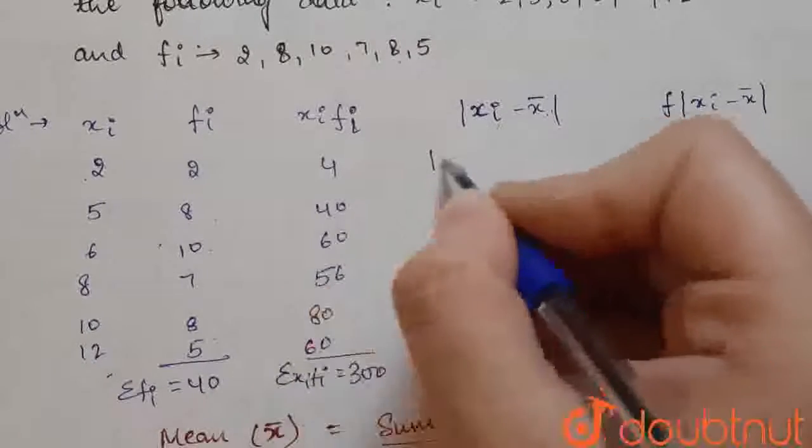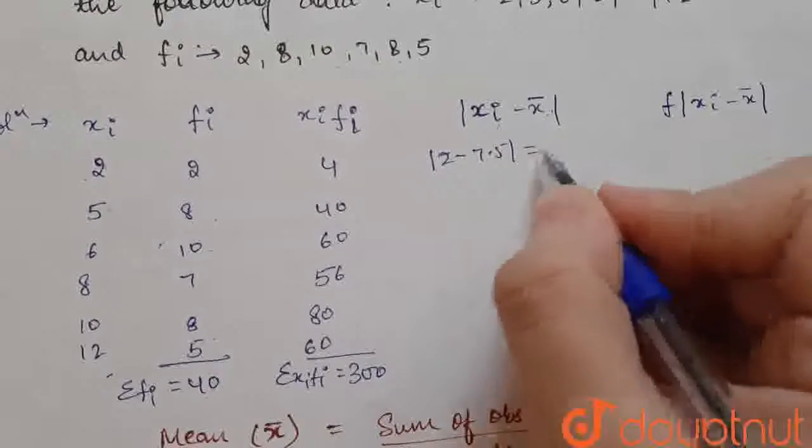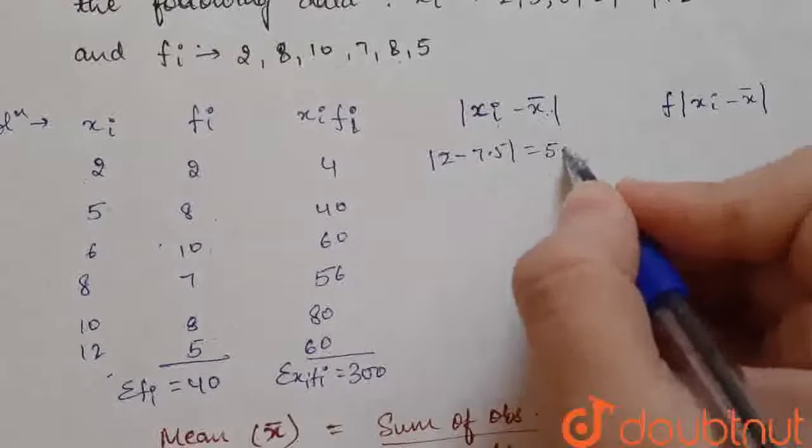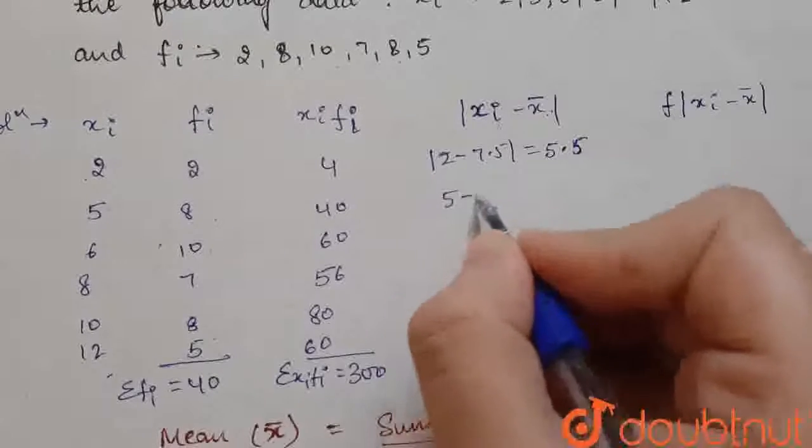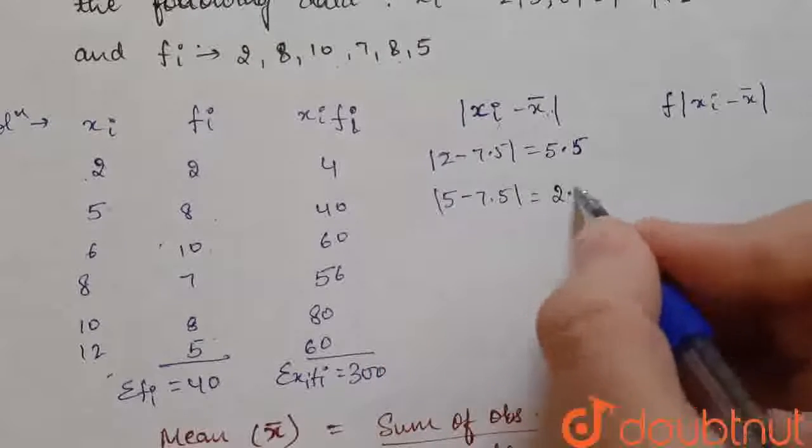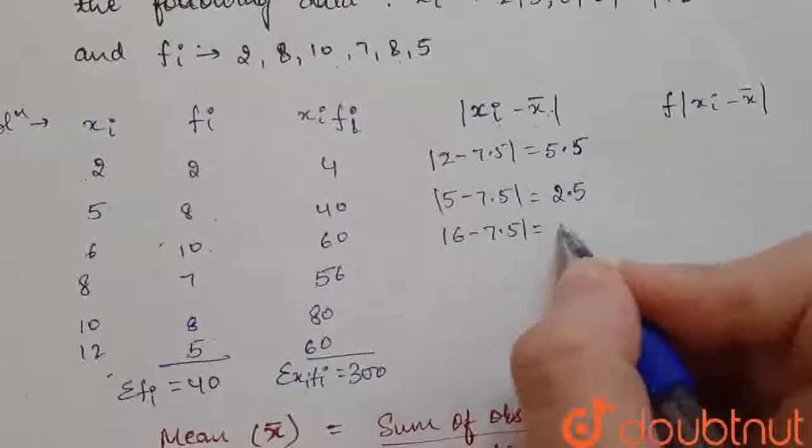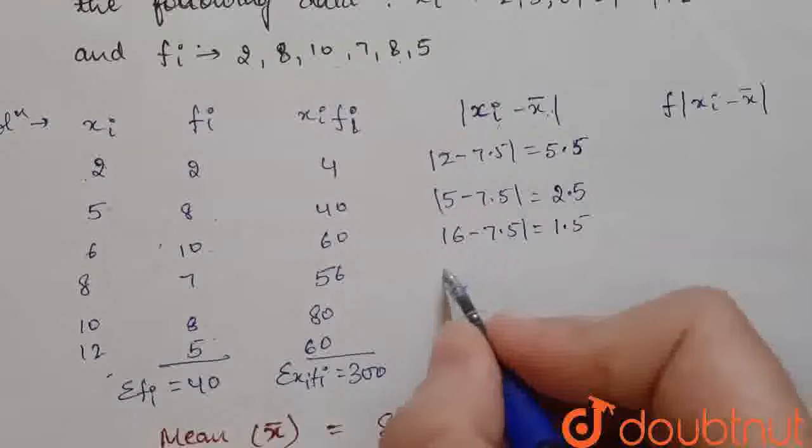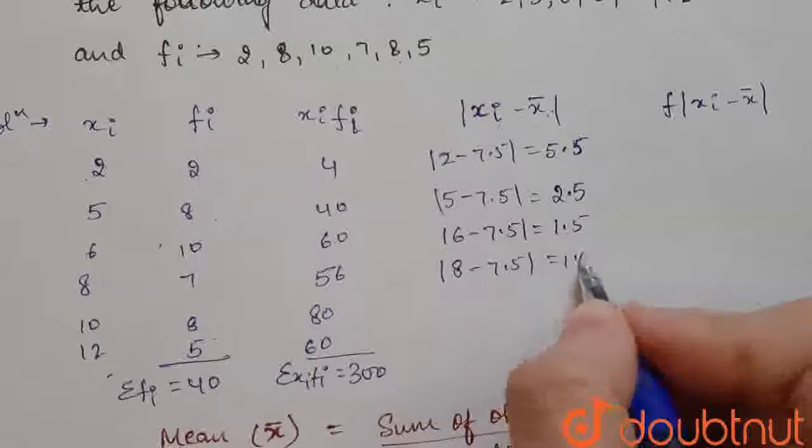So, here 2 minus 7.5, mode of this. This will give us 5.5. 5 minus 7.5, this will give us 2.5. 6 minus 7.5, 1.5. 8 minus 7.5, 0.5.